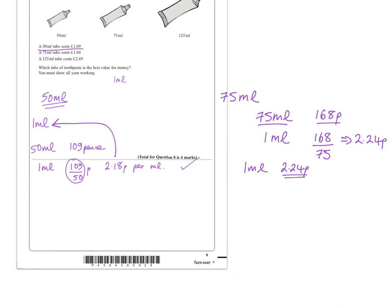So we can write here 1 mil would be 2.24 p. Our first type, our 50 mil toothpaste, that was, don't forget, 2.18 p per milliliter. Now last of all, we want to look at the 125 milliliter toothpaste. And we know that 125 milliliters was £2.69 or 269 p. So 1 milliliter or 1 mil would be 269 divided by 125. Now I'm reaching for my calculator, of course. There are many ways you can do this without, you just buy pencil and paper. But let's just get this done with the calculator first. And we get 2.152 pence, that's per milliliter.